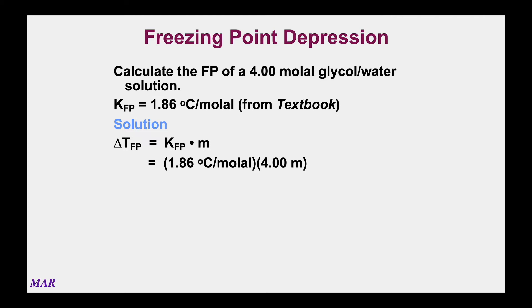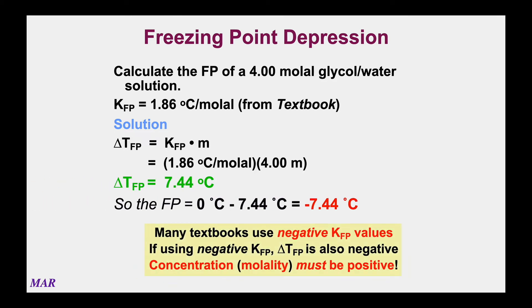Let's calculate the freezing point of the 4.00 molal ethylene glycol water solution. The KFP, the freezing point constant for water, is 1.86. So we calculate delta T first: ΔT = K × m, so 1.86 times 4.00 comes out to be 7.44. Normally water freezes at zero, meaning the solution is going to freeze at 7.44 degrees less than that — or negative 7.44. That's how you calculate the freezing points.